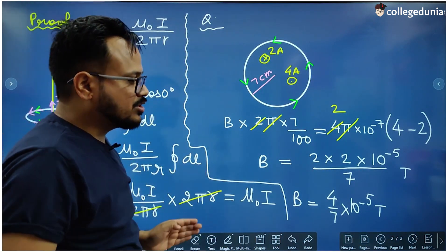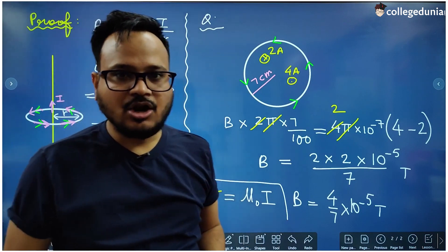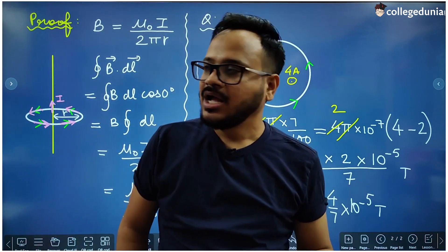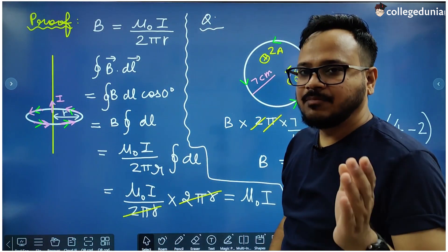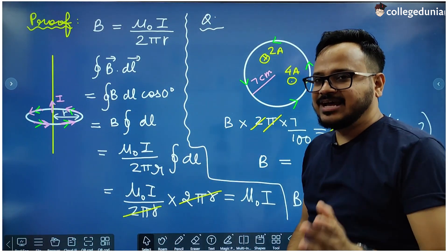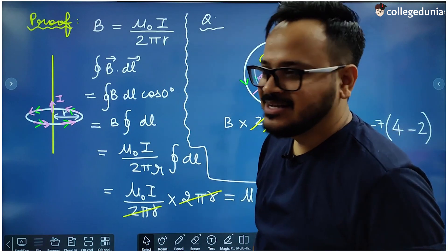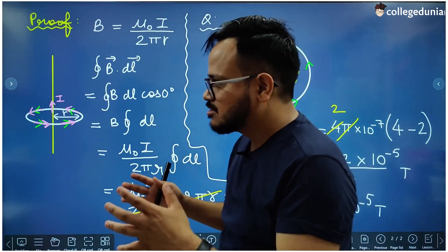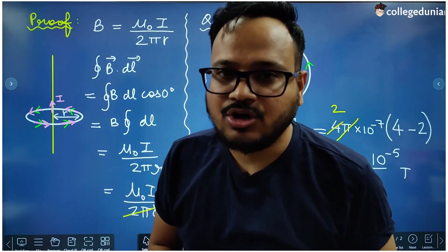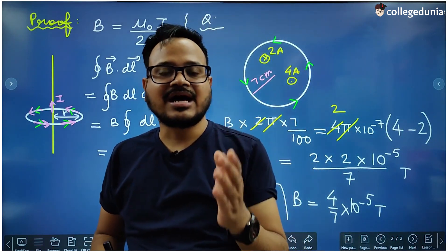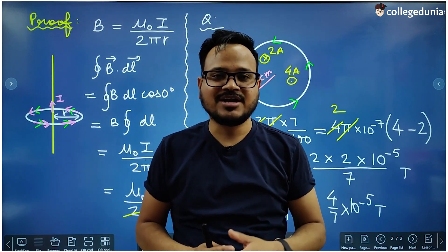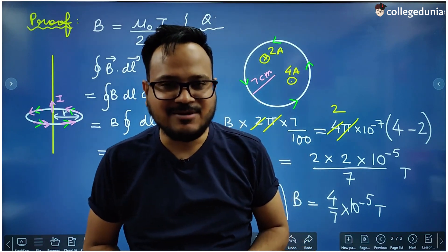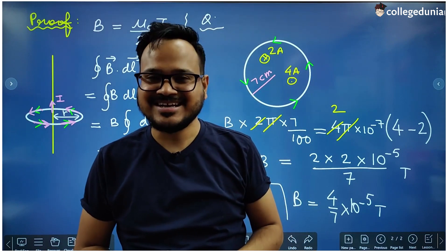So this was the concept of Ampere's Circuital Law — the statement, the proof, and an example. It is a very important topic in class 12 physics, so prepare it carefully. I will meet you in the next lecture — till then, all the best.